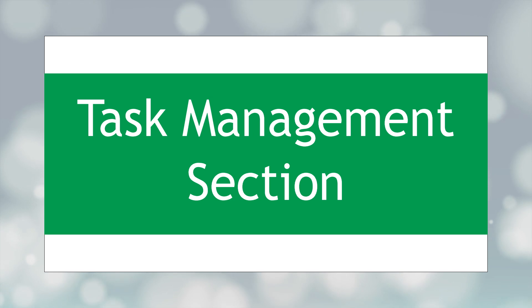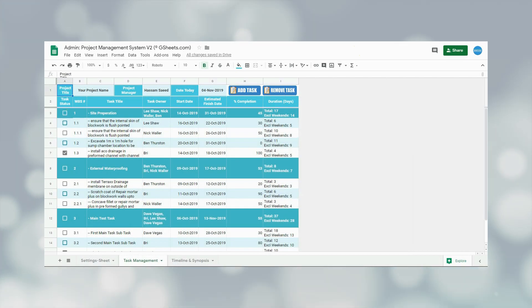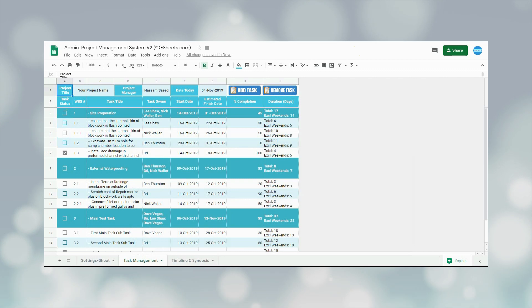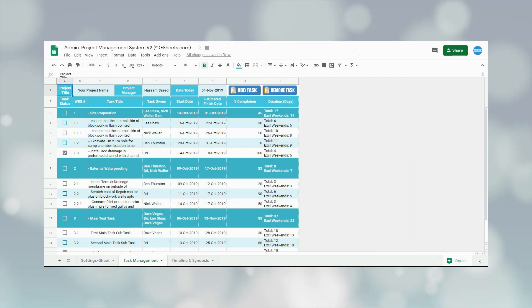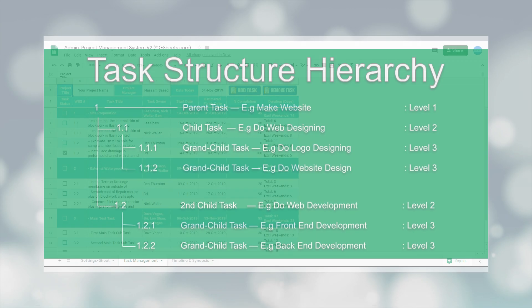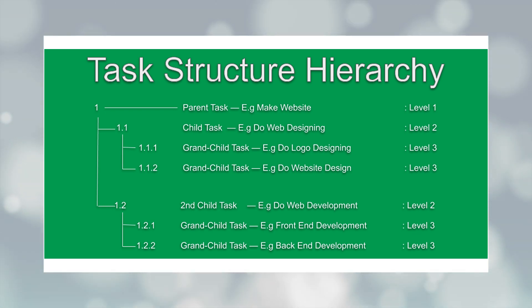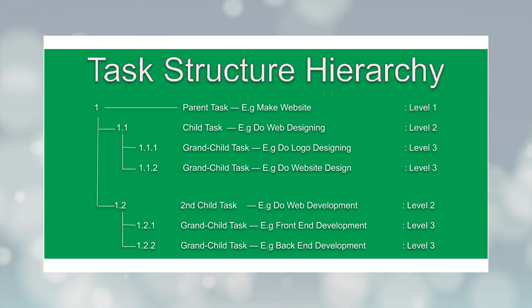Now coming to the task management section. This section shows the record of existing tasks along with their status and details. This section will be used by the admin for three purposes: first to add a new task, second to remove a task, and third to update an existing task. The task structure used in this system is a three-level drill-down structure, meaning each parent task can have a child task, and that child task can also have a grandchild task.